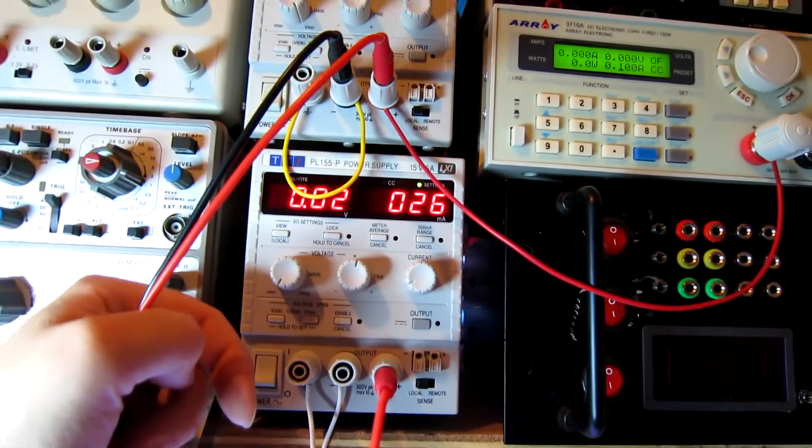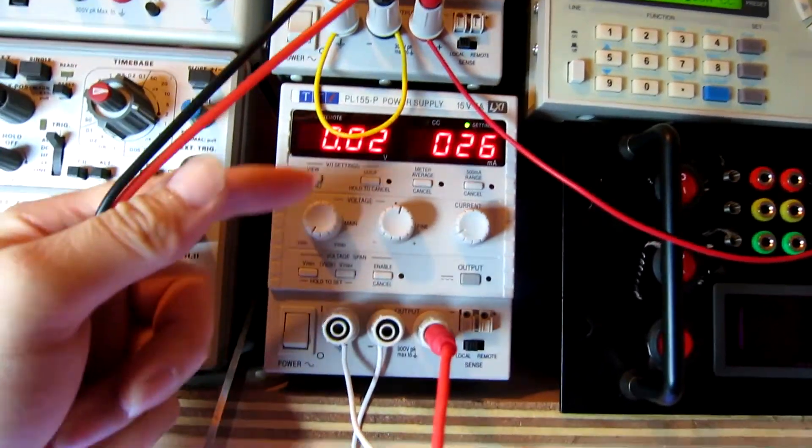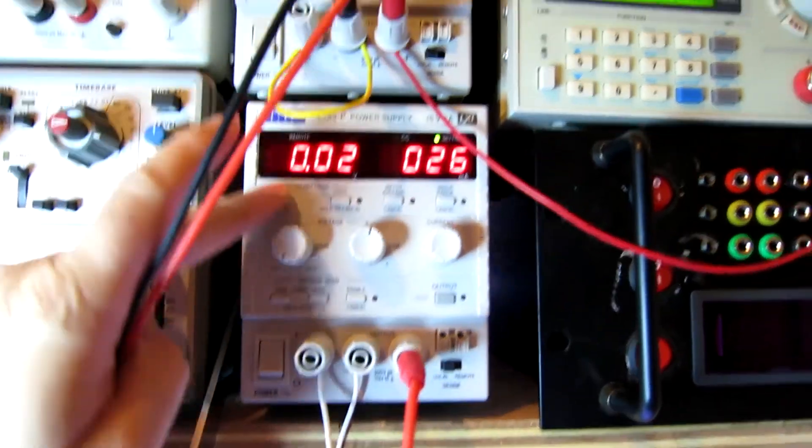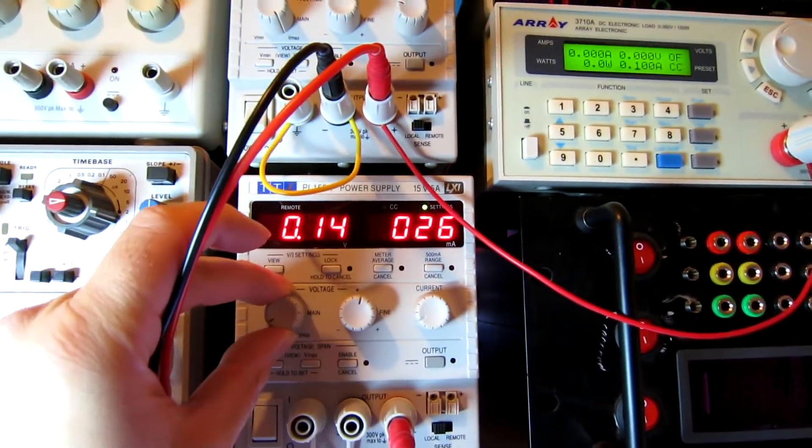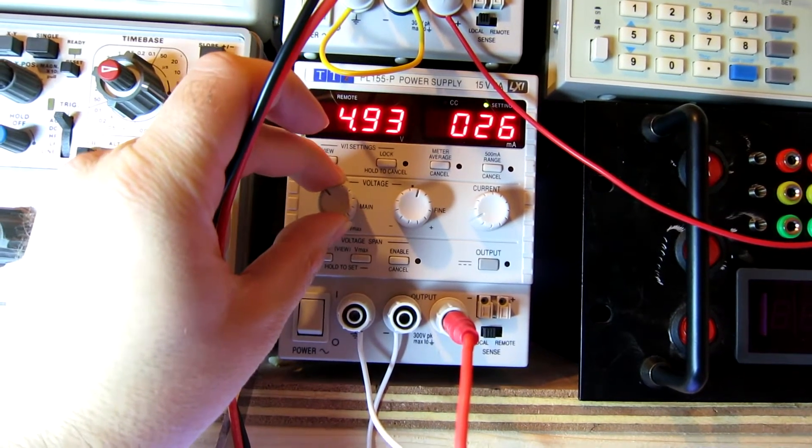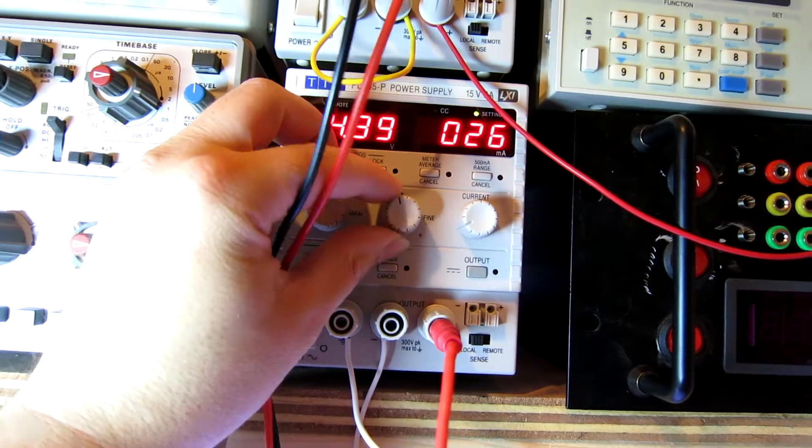This is our power source here. I've got it limited to a small amount, 123 milliamps, arbitrary value, but it's basically just so I don't short anything out or smoke anything. Then this is going to be our gate control power supply.